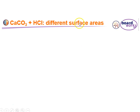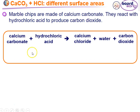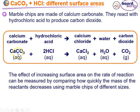To look at surface area, we use calcium carbonate — a solid, the chemical found in marble — reacting with hydrochloric acid. Using marble chips of different sizes with HCl produces calcium chloride, water, and carbon dioxide gas. Instead of changing the concentration of hydrochloric acid, this experiment looks at the effect of surface area. The concentration of HCl stays the same for each experiment; we only change the surface area of the marble chips.